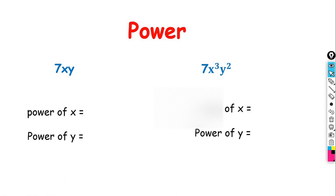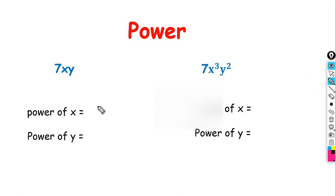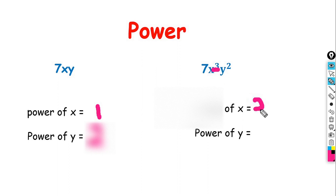Observe the first term. It has two variables, x and y. What is the power of each of these variables? The power of x is 1. Now let's look at the second term. The power of x is 3 and the power of y is 2.